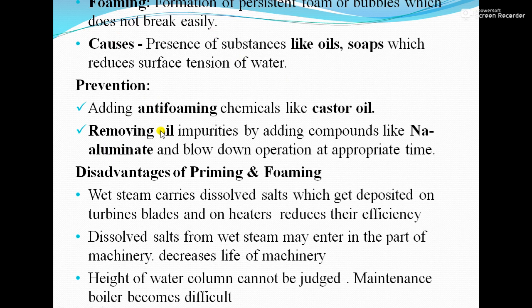Disadvantages of priming and foaming: first, wet steam carries dissolved salts which get deposited on turbine blades, reducing the efficiency of the boiler. Second, dissolved salts from wet steam may enter parts of the machinery, decreasing the life of the machinery. Third, due to priming and foaming, the actual height of the water column cannot be judged, making maintenance of the boiler difficult.